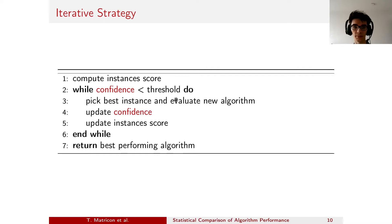For the second component, the confidence, it represents the state of the algorithm and also serves as the stopping condition. It's an estimation of the accuracy of our current prediction.